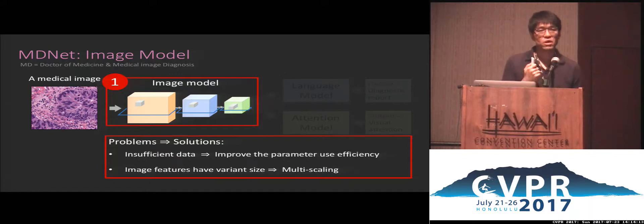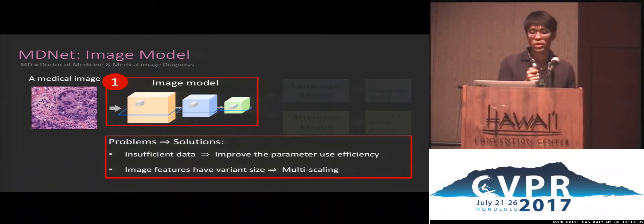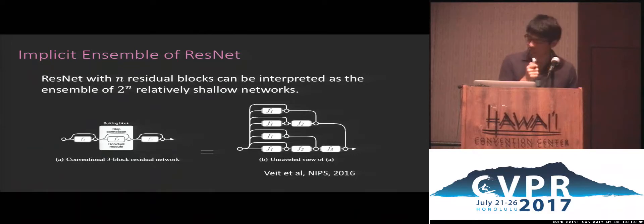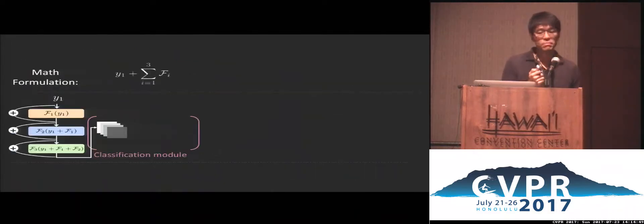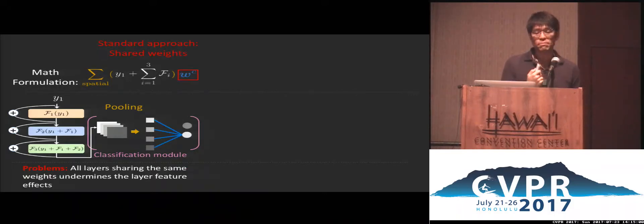Extracting image features using CNNs is still key for successful text generation. We need to consider two facts common in medical images: first, medical images are not sufficient in quantity; and second, image features in medical images often exhibit across various scales of area. So improving model efficiency and multi-scale handling is very important. Our image model is built on ResNet. A recent study showed that ResNet has implicit ensemble aspects. When considered from this perspective, the classification model using pooling to generate a feature vector and a single weight to compute label probabilities is not optimal, as letting all layers share a single weight W undermines the effect of different layers.